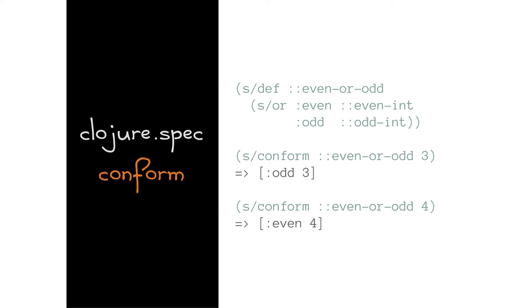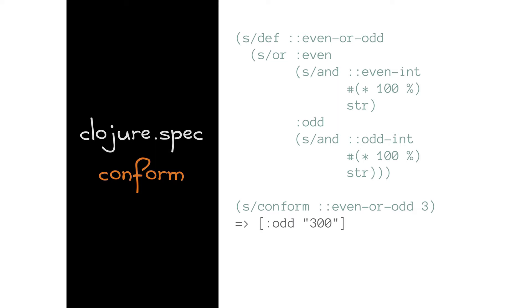The reason it returns that data point is because we're talking about conforming data — not just validation and branching, you can actually transform data along the way. This is similar to monads — like an either monad that will either return an error or the final result. Here we complicate the example: instead of just checking if it's an even int, if it succeeded up to this point I want you to multiply by 100 and convert it to a string. You can do arbitrary pipelines with validation checking along the way. So even-or-odd returns 300 and 400.